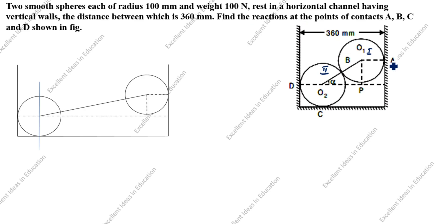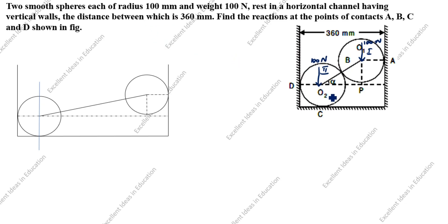The reactions we need to find are RA, RB, RC, and RD. The self-weight is not mentioned in the drawing but is given in the question as 100 Newtons. Self-weight always acts towards the center of the sphere in the downward direction — 100 Newtons for both sphere one and sphere two. The radius of each sphere is 100mm.